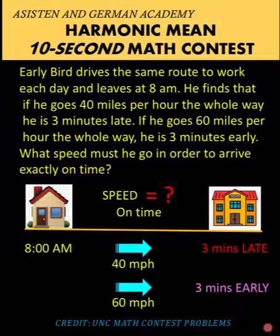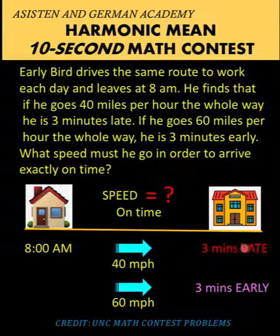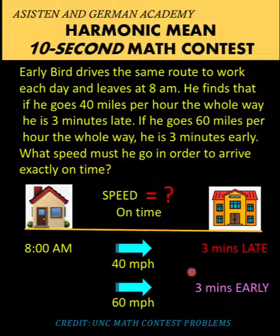Now let's solve this problem together. One common mistake here is to get the average of the speeds, because for the first speed Early Bird is three minutes late and for the second speed he is three minutes early. That is wrong, because speed and time are inversely proportional, so you cannot just get the average of 40 and 60 and say the answer is 50 miles per hour.